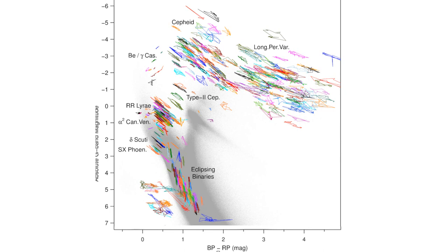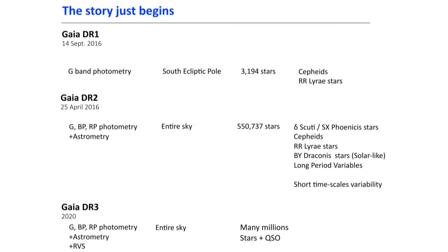What we see is that it is just the beginning. The DR2 with its already enormous catalog is just the tip of the iceberg of Gaia variable analysis.